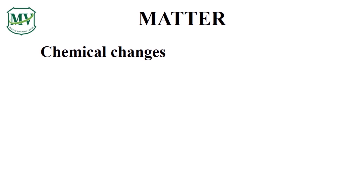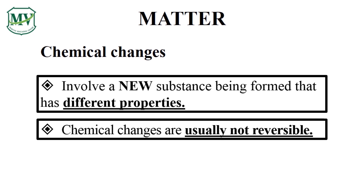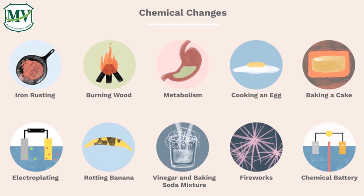The second type of change is chemical. Unlike physical change, which is reversible, chemical change is irreversible. It also involves the formation of a new substance with different properties. Examples of chemical change include iron rusting, burning wood, metabolism, cooking an egg, baking a cake, electroplating, rotting banana, vinegar and baking soda mixture, fireworks, and chemical battery. Can you think of some other examples?